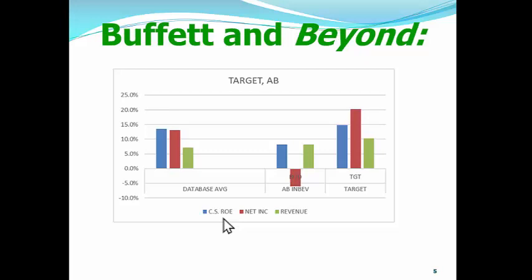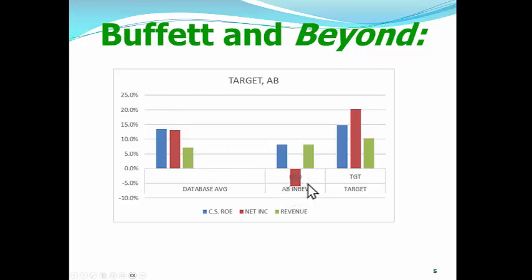And the 22 years of research — you're going to see that at the end. So here is the clean surplus return on equity of the 1,800 to 1,900 stocks we have in our database. This is the net income, which is the clean surplus earnings of the average stock, and this is the revenue of the average stock. Now looking at Budweiser, we can see that it has a smaller clean surplus ROE than the average stock.